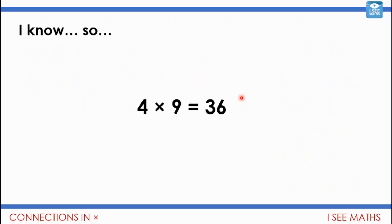Now let me just give you one example then of I know and so. So this time I've got four times nine equals 36. So I know this fact. So I wonder what I can work out.